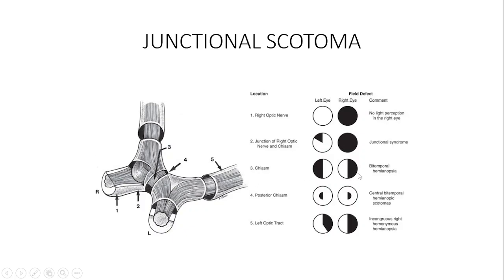Lesions at the optic chiasma typically give you what we call bitemporal hemianopia — hemianopia because half is affected, and both halves are temporal. If you take your left eye, it is the temporal side affected, and the same for the right eye. The person has bitemporal hemianopia because it is the nasal fibers that cross at the chiasma, so if the nasal retina is affected, it projects into the temporal field, giving temporal hemianopia in both eyes.